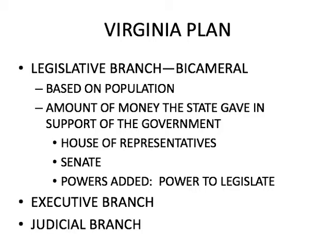The Virginia Plan was based on the large states. When delegates came to the convention, they realized they needed a new government structure. The Virginia Plan allowed for a bicameral legislative branch — meaning two houses. They created the House of Representatives and the Senate. The House of Representatives would be based on population, which is what the large states wanted. The Senate would also be based on population. They also created an executive branch and a judicial branch.